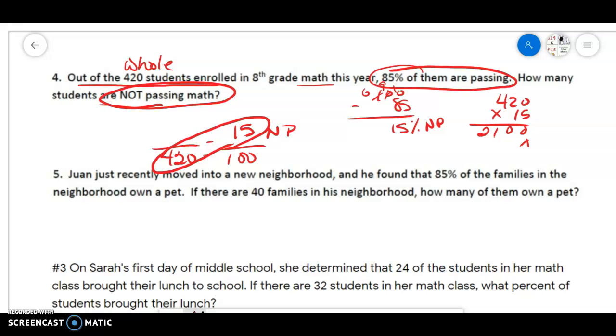420 times 15 is 6,300. Don't forget your placeholders. And then when we divide that by 100, we can take off our zeros.